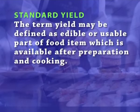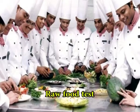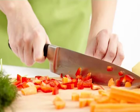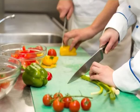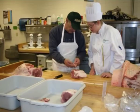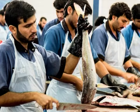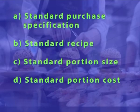To assess performance by the standard cost, the following standards have to be fixed. Standard yield. The term yield may be defined as the edible or usable part of a food item which is available after preparation and cooking. To arrive at the standard yield, tests on food are conducted. Raw food test: to determine the count and weight for vegetables and fruits used after waste and cuttings are removed for specific uses. Butchering test: to fix the actual cost of meat, poultry, and fish after waste and trimmings have been considered. Once the standard yield is fixed, the performance of the kitchen can be measured, and further standards can be set: standard purchase specification, standard recipe, standard portion size, and standard portion cost.